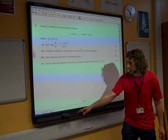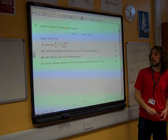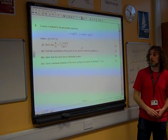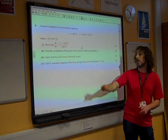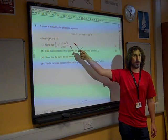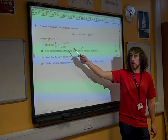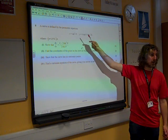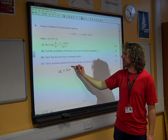The parametric equations question: x equals sine squared theta, y is 4 sine theta minus sine cubed theta, for theta between minus pi over 2 and pi by 2. Show that dy by dx is equal to that. Well, we know where we're going with this, we need to differentiate these two things individually.